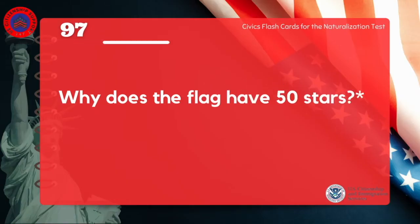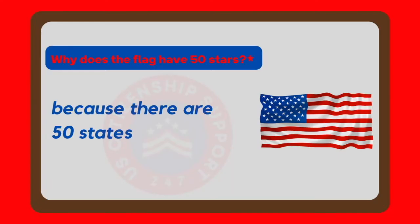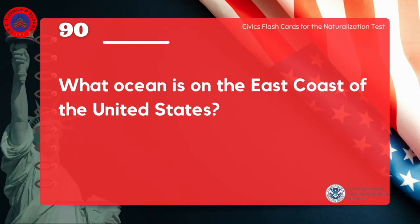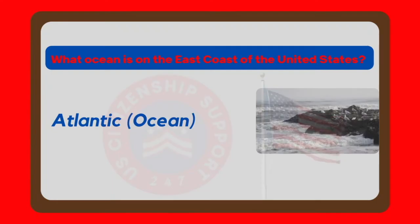Why does the flag have 50 stars? Because there are 50 states. What ocean is on the east coast of the United States? Atlantic Ocean.